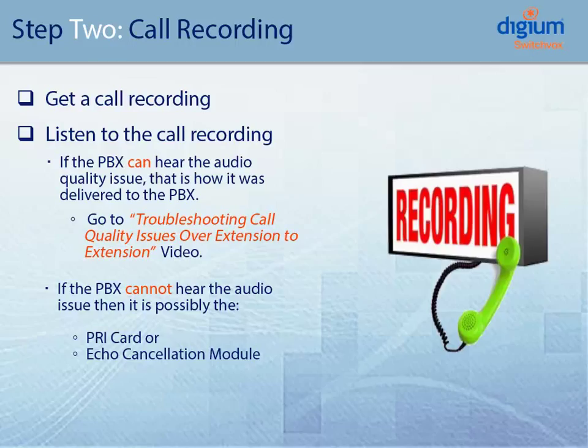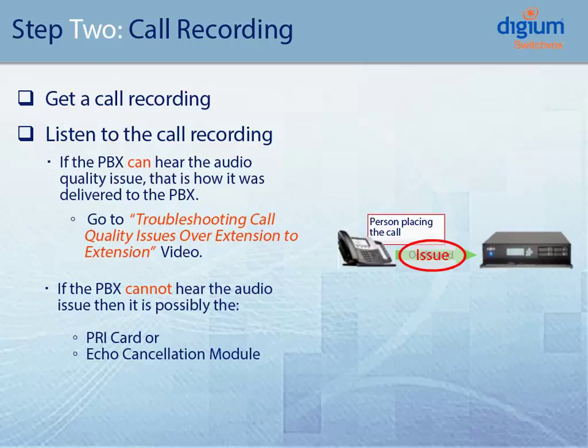Next, you will need to obtain a call recording of the issue that is occurring and listen to the recording to see if you can detect the issue. If the PBX can detect the issue, then that is how the PBX received the audio, and you would then need to watch the video on how to troubleshoot a call quality issue over extension to extension.